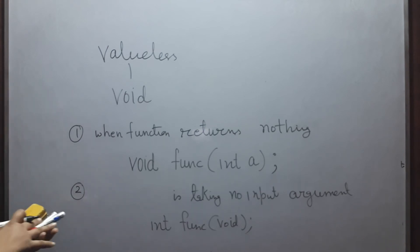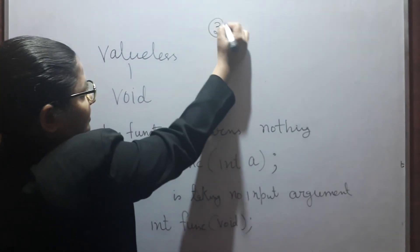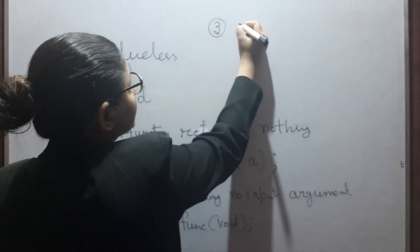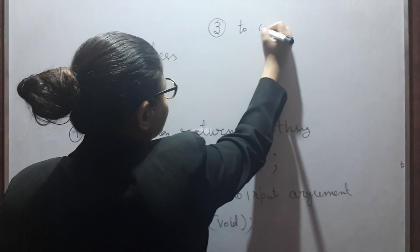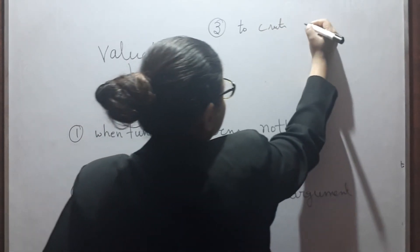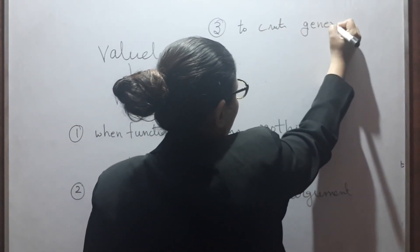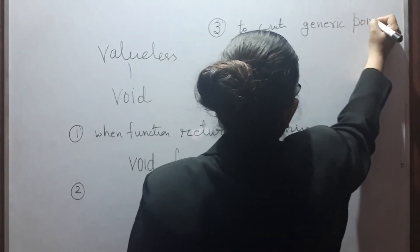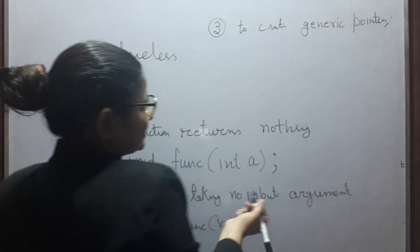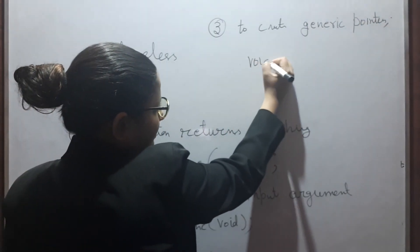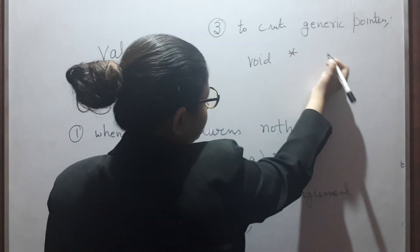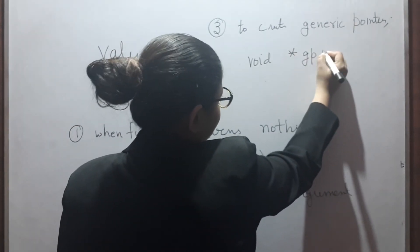The third point, or the third use of void data type is to create generic pointers. For example, void star generic pointer. So as you can see, void GP is a generic pointer and can be made to integer pointer.